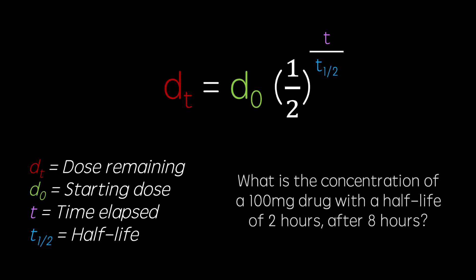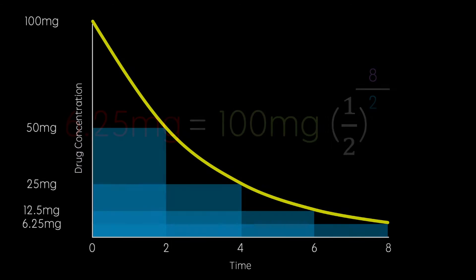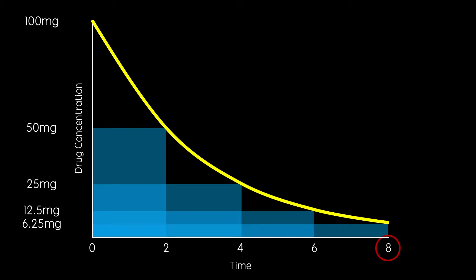Using this equation, pause this video now and calculate the concentration of a 100 milligram drug with a half-life of 2 hours after 8 hours. The answer is 6.25 milligrams, which we can check using the half-life graph.